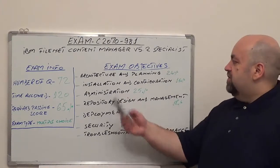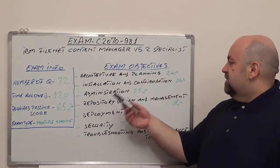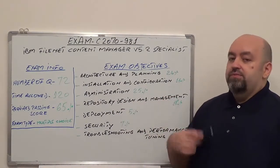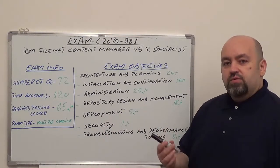First one is Architecture and Planning, with 24% of total questions. Second one, Installation and Configuration, with 11% from total questions. Third one is going to be Administration, 25% from total questions.